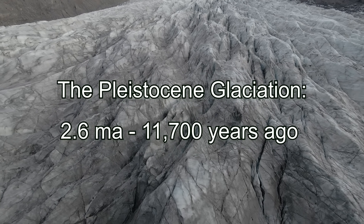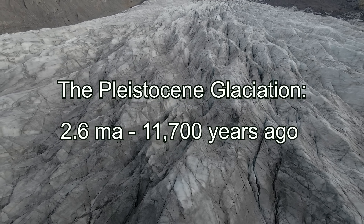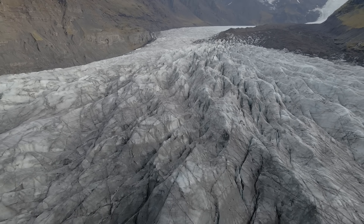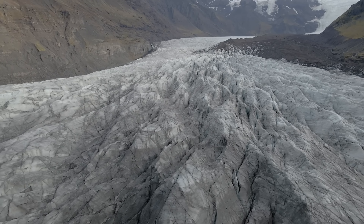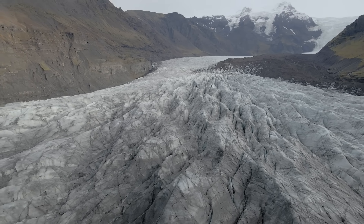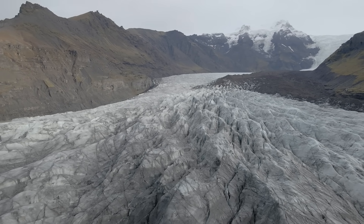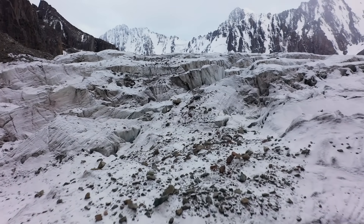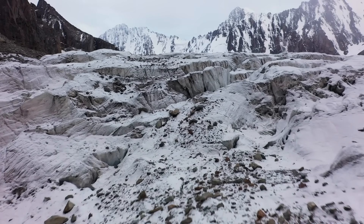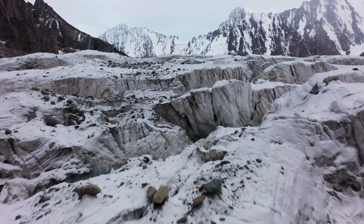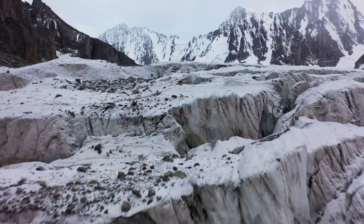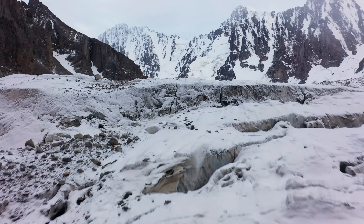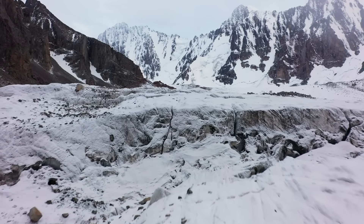The Pleistocene Epoch, approximately 2.6 million years ago to 11,700 years ago, was characterised by repeated glacial-interglacial cycles worldwide. In Australia, Pleistocene glaciation was limited to high elevations in the south-east of the continent and in Tasmania, due to Australia's relatively low latitude and arid climate during glacial periods.